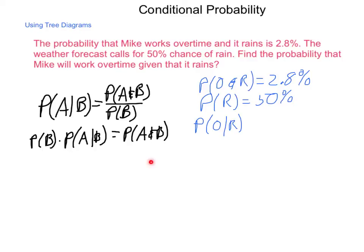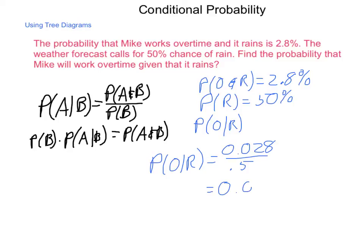Setting it up: the probability of overtime given rain equals the probability of overtime and rain — which is 0.028 — divided by the probability of rain — which is 0.5. Dividing 0.028 by 0.5, we get 0.056, or 5.6%. There is a 5.6% chance that Mike will have to work overtime given that it rains.